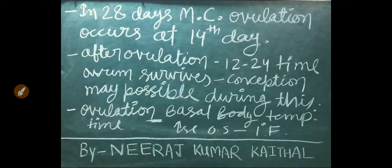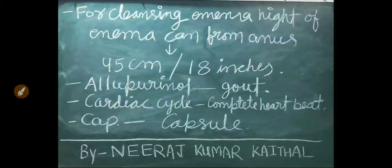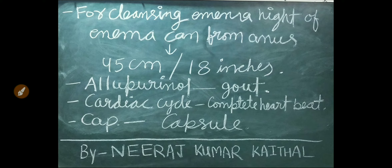During ovulation time, basal body temperature increases by 0.5 to 1 degree Fahrenheit. For cleansing enema, the height of the enema can from the anus is approximately 45 cm or 18 inches, not more than that. Allopurinol drug is used in the treatment of gout disease.